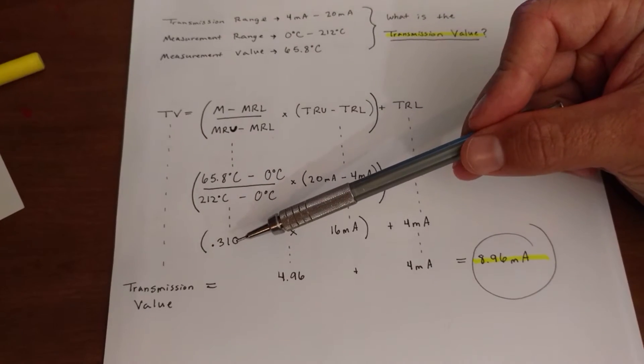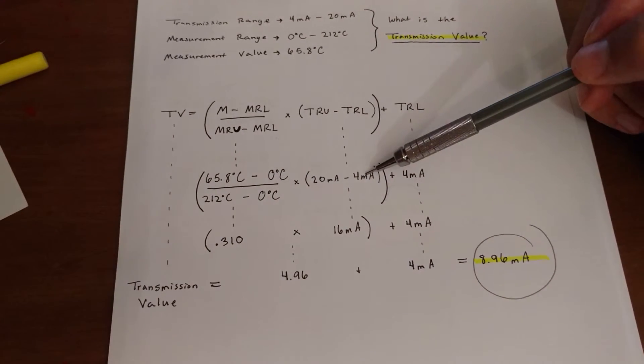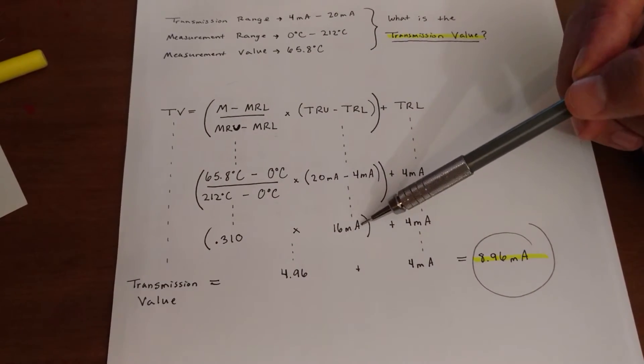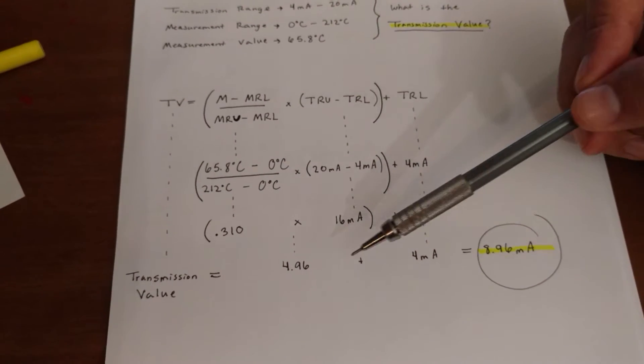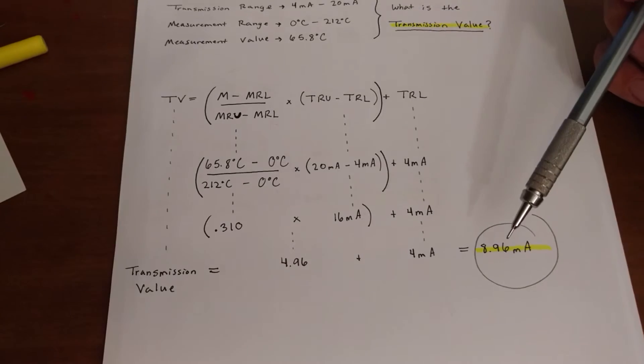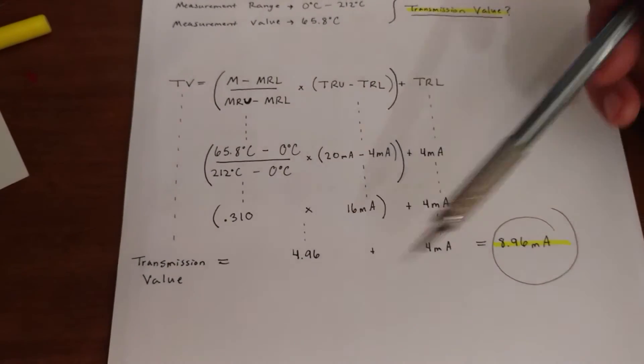So when you do this part, you're going to get 0.310. When you do this part, 16, you multiply that together, you get 4.96, you add 4. And once you do that, you're going to get 8.96, and it is your transmission value.